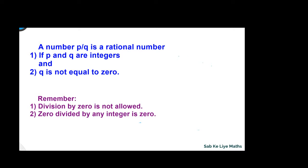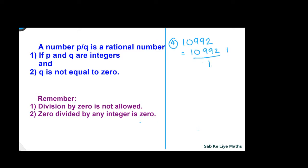Next example: 10992. We write this in the form P by Q as 10992 upon 1, where P is equal to 10992 and Q is equal to 1. Both are integers, so the first condition is satisfied, and Q is not equal to 0. So again, this is a rational number.